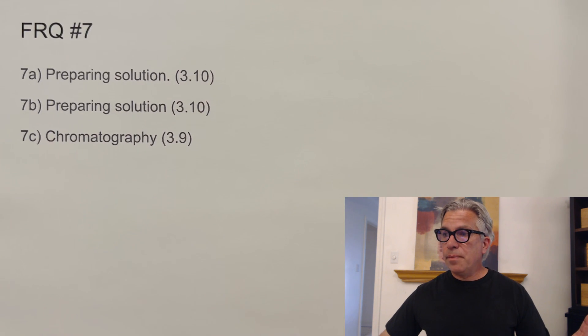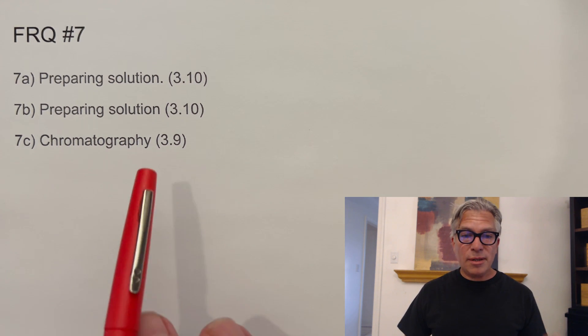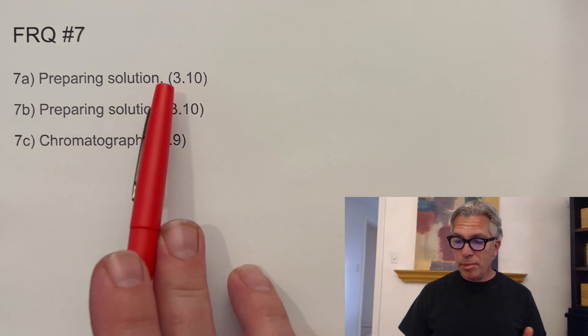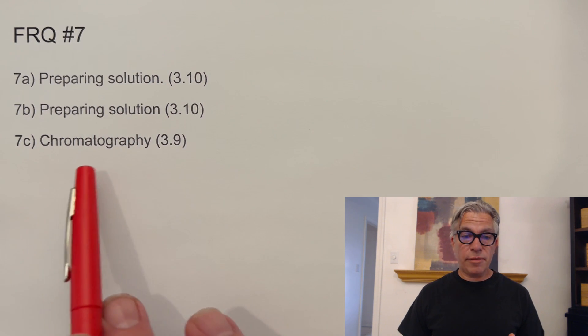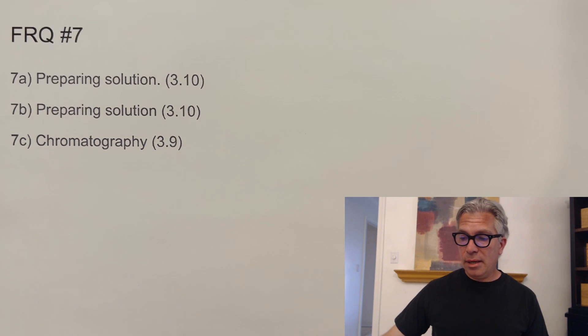And look at this. We're off to our last FRQ. Again, I'm not doing any of these in detail. I'm looking for general overall trends. Unit seven, FRQ number seven, was actually all unit three. Preparing a solution, preparing another solution, and doing some chromatography. And so you might be surprised by that. So let's just jump right into some overall stats.